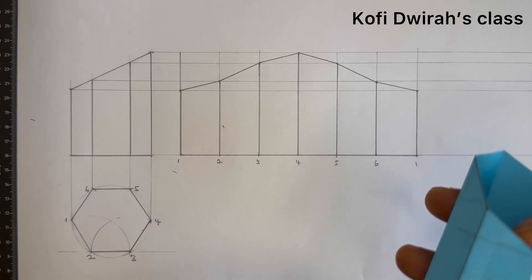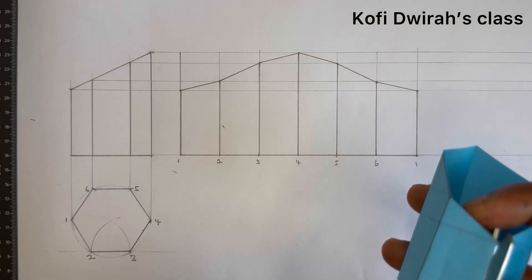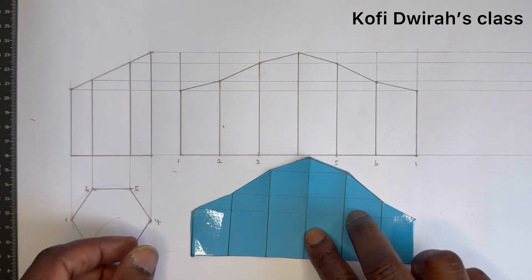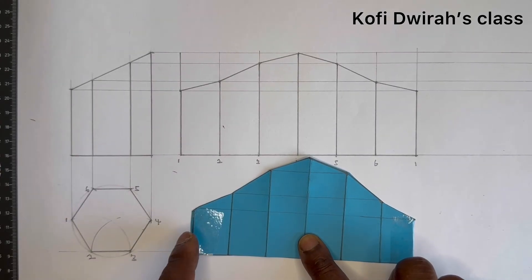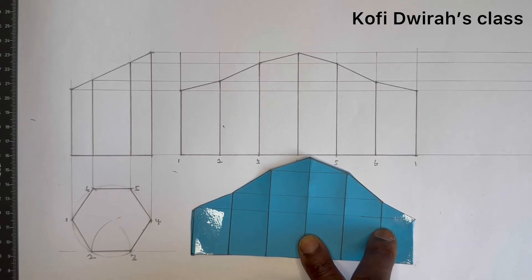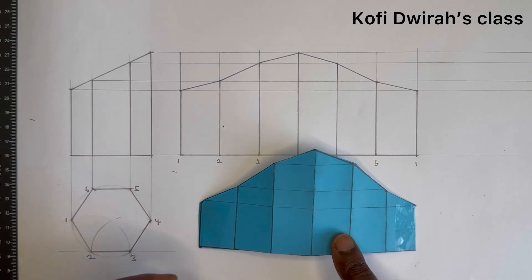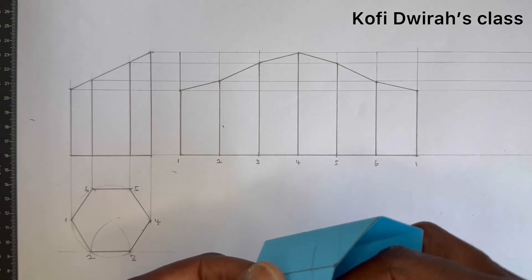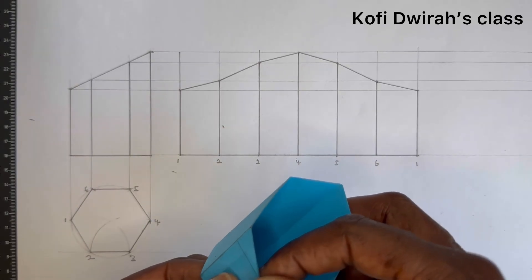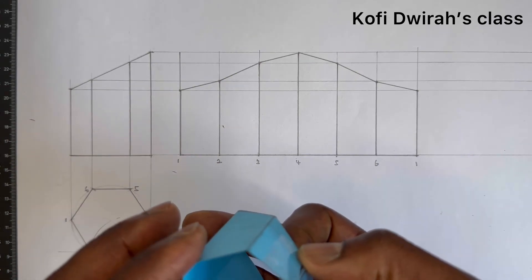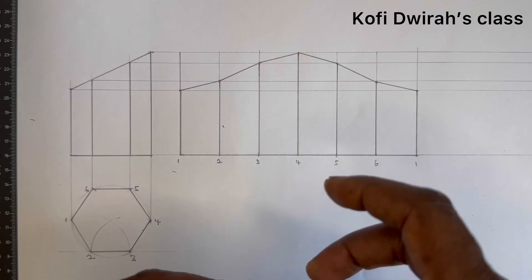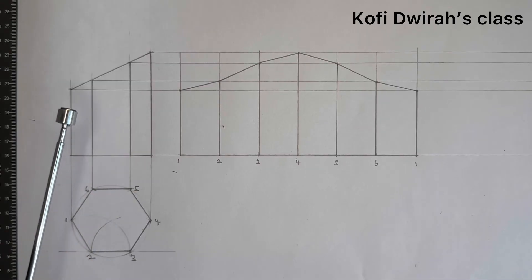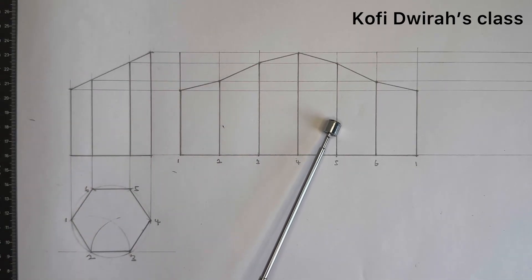Now let's open this truncated hexagonal prism and see if we get similar results. With our scissors — here, see, we have this line, we have 1, 2, 3, 4, 5, 6, and 1. So if you want to form the truncated hexagonal prism, when you join it here and look at the base, you see the hexagon. So when you open it, this is what you get — it's the same as the drawing. It's very simple: draw the plan, the front view or front elevation, and the development of the surface.